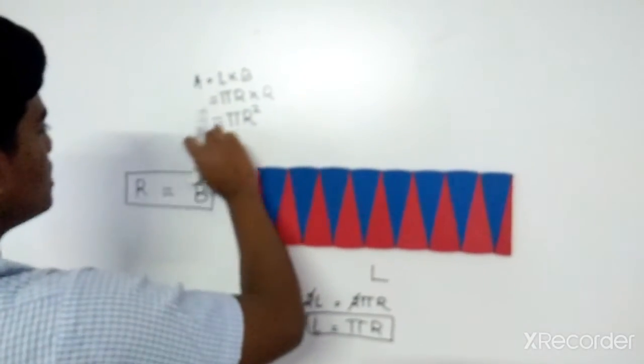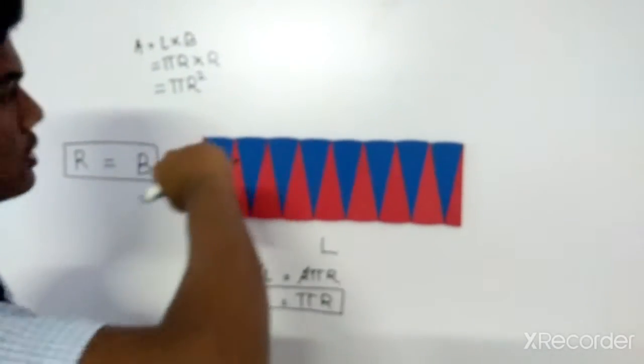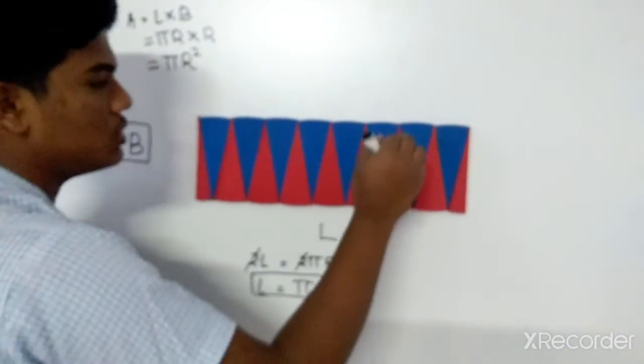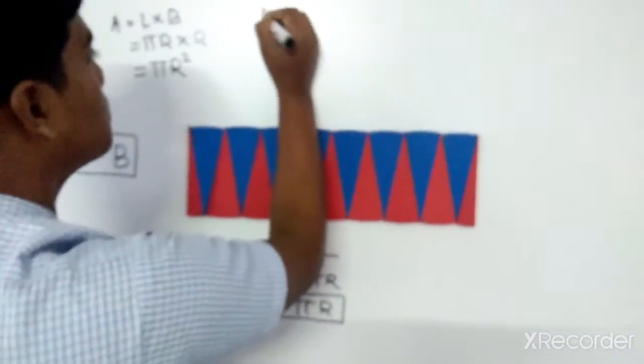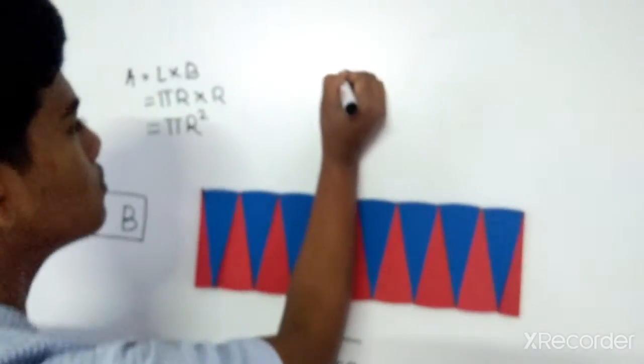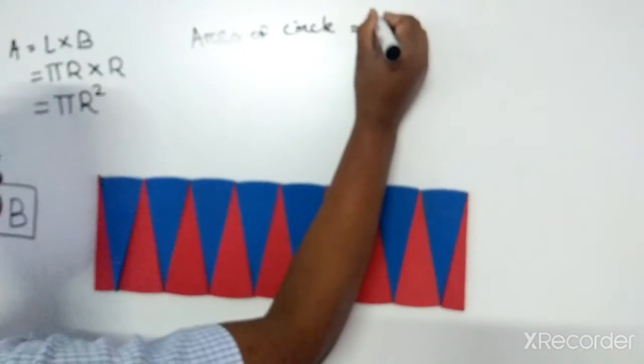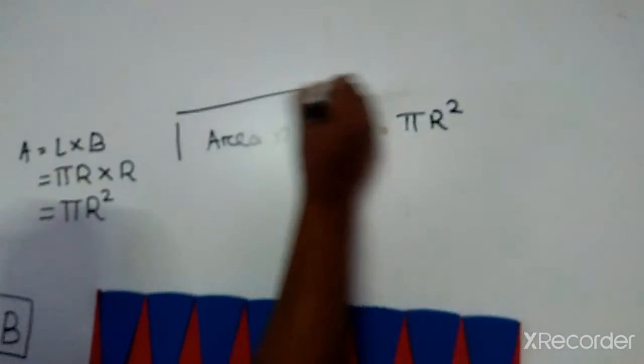Area of rectangle is equal to pi r square. So, this rectangle is equal to pi r square. So, area of rectangle is equal to pi r square. This is the formula.